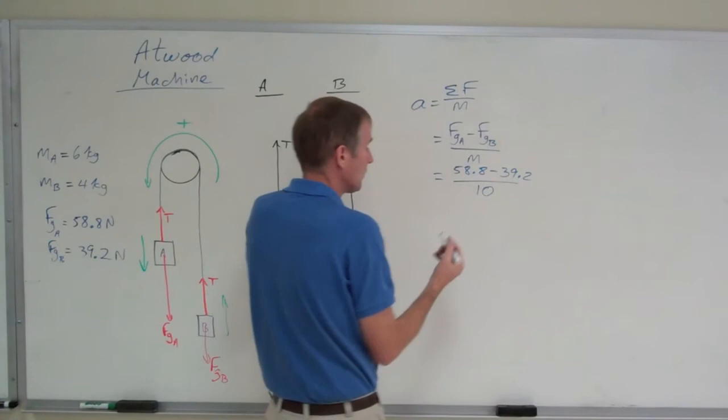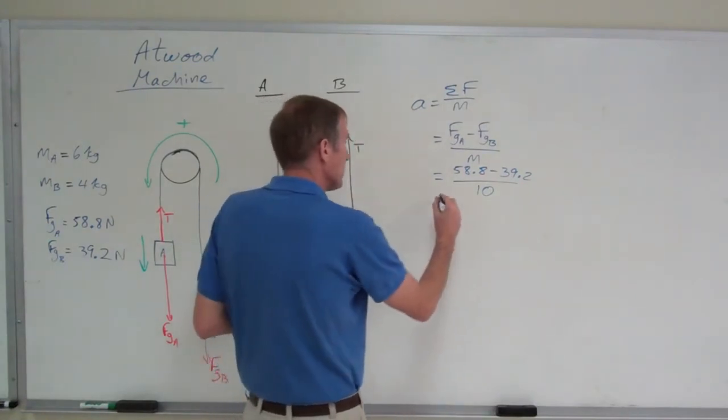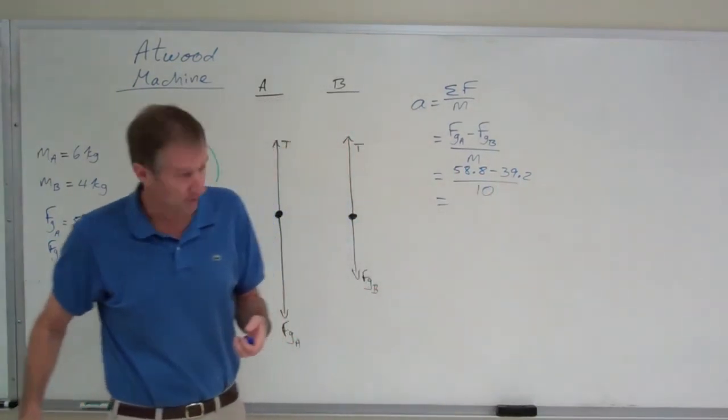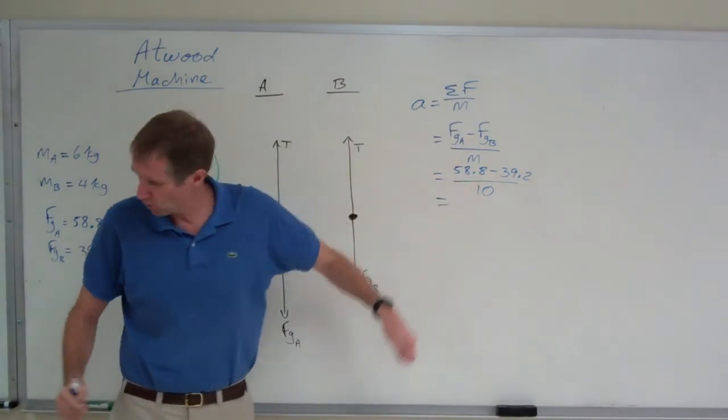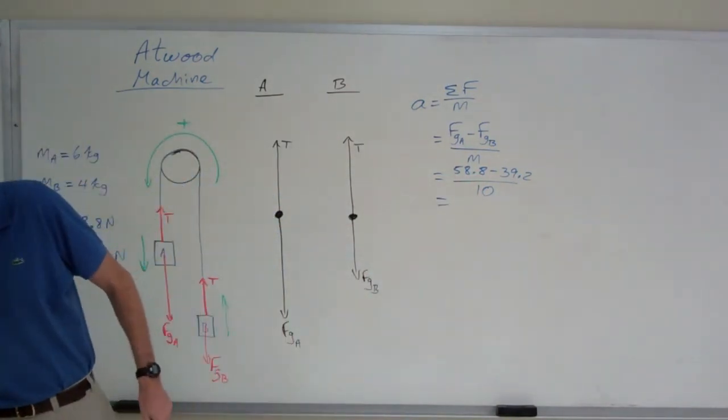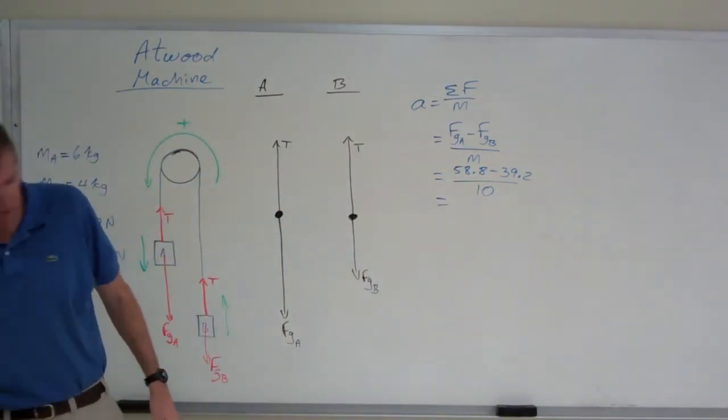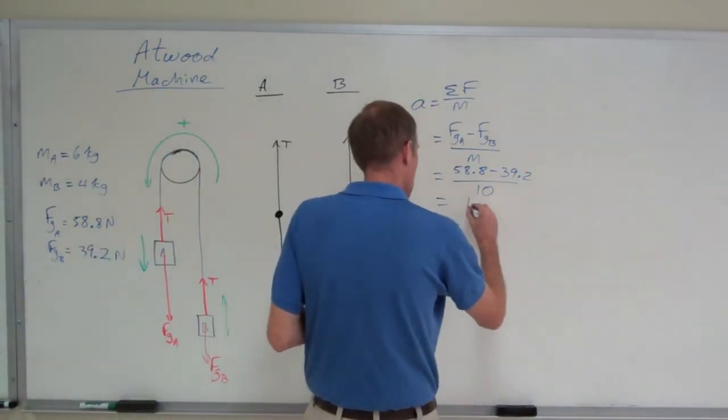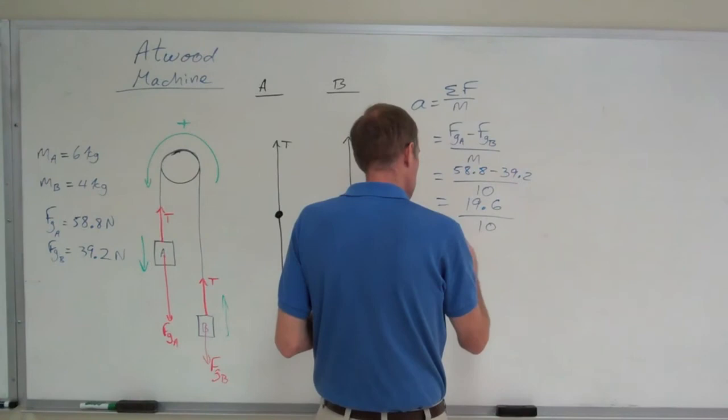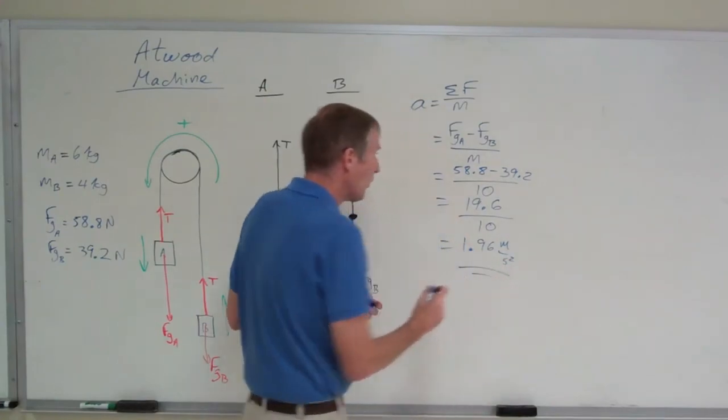10 kilograms total, 6 plus 4. What is that net force? That net force, the difference between the weights, is, don't panic, I calculated it. It's 19.6 newtons divided by a mass of 10 is an acceleration of 1.96 meters per second squared.